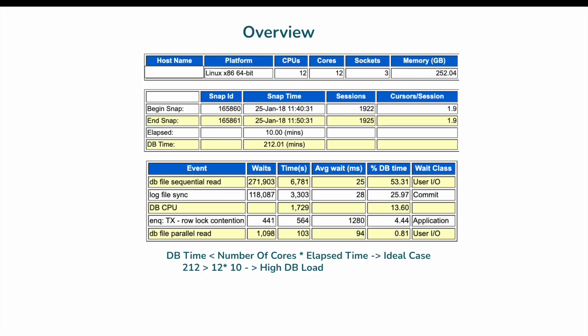This is the overview of the AWR report. You can see that the database has 12 CPUs and 12 cores, and the elapsed time is 10 minutes. Like I said in my previous slide, it is always best to capture an AWR report for the smallest interval — 10 minutes — which covers the issue time.